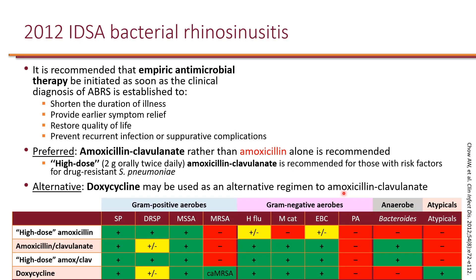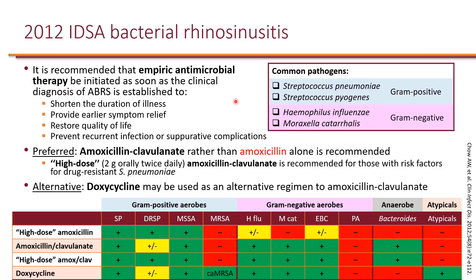These are the 2012 IDSA guideline recommendations for bacterial rhinosinusitis, and they recommend that empiric treatment should be initiated as soon as possible if you suspect bacterial rhinosinusitis. This is for the purpose of shortening the duration of illness and to provide earlier symptom relief, restore quality of life, and also to prevent recurrent infection or suppurative complications.